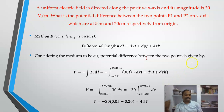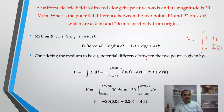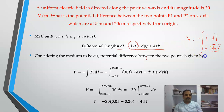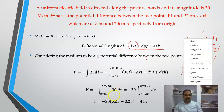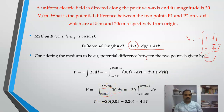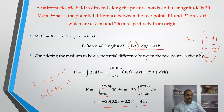Alternatively, using the integral formula V = minus integral of E·dr: since the field and length are along the x-axis only, E = 30i and dl = dx·i. So E·dl = 30 dx. Integrating from 0.20 to 0.05, we get V = 4.5 volts, confirming the result. This is how to apply the integral method for calculating electrostatic potential.